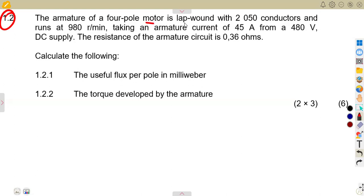Taking an armature current of 45 A from a 480 V DC supply. Because of the specific EMF equation, we do not even need to consider the diagram. I hope now guys you do understand your diagrams and so forth. There is no need. So we are given that it's a four-pole motor.